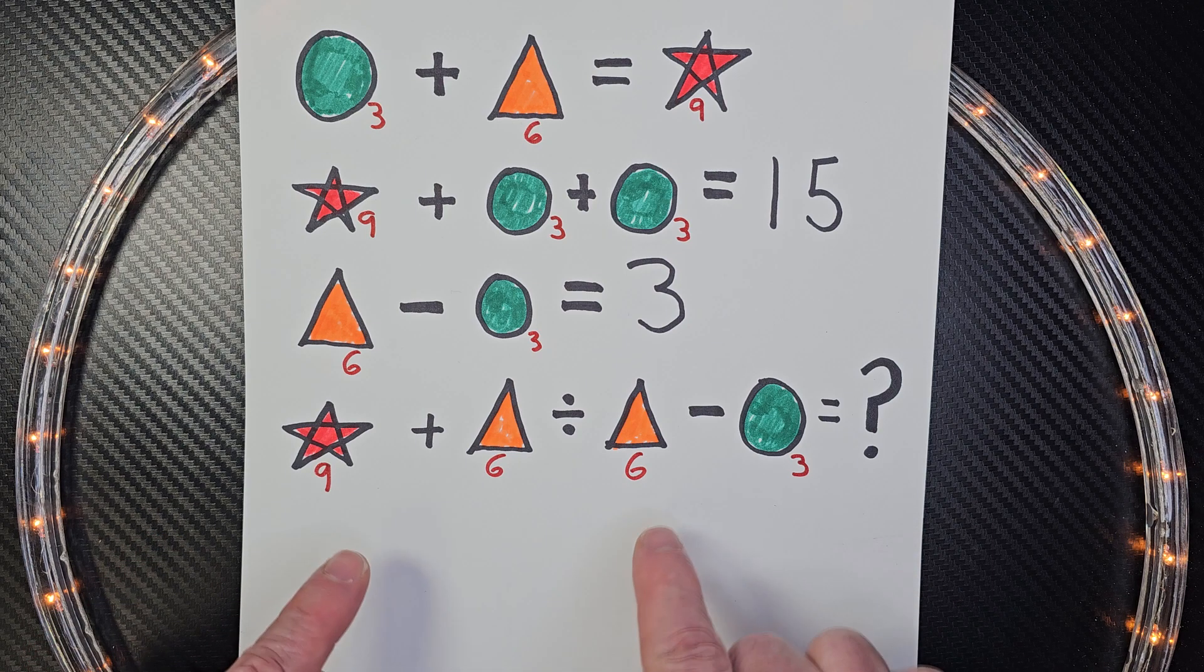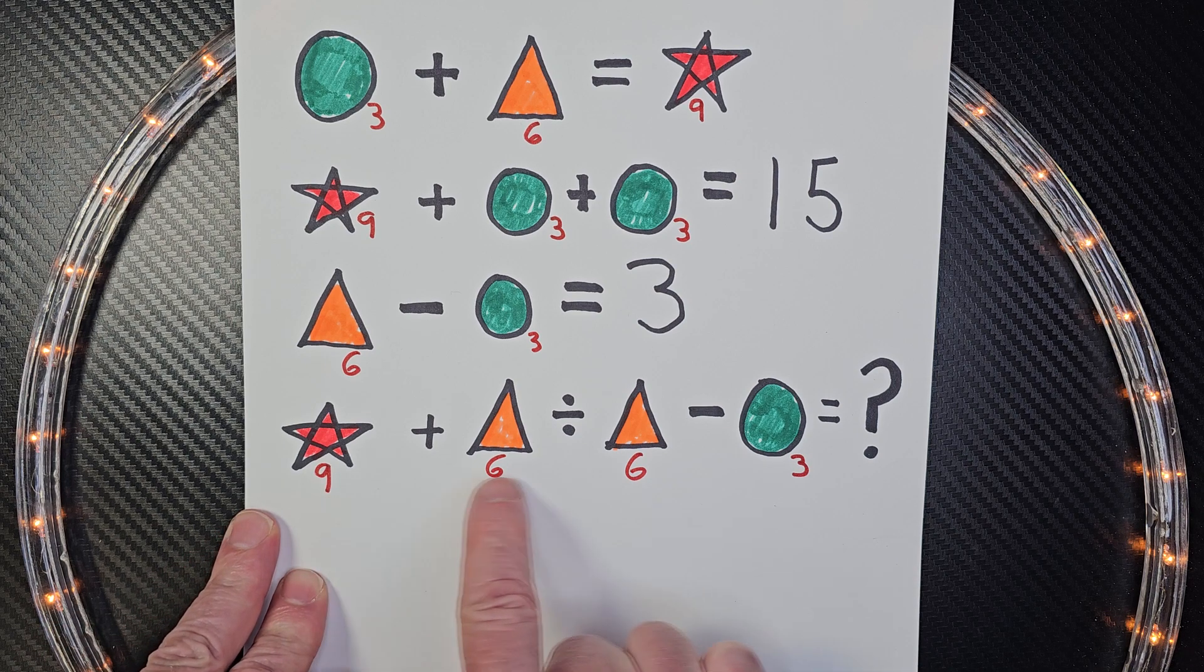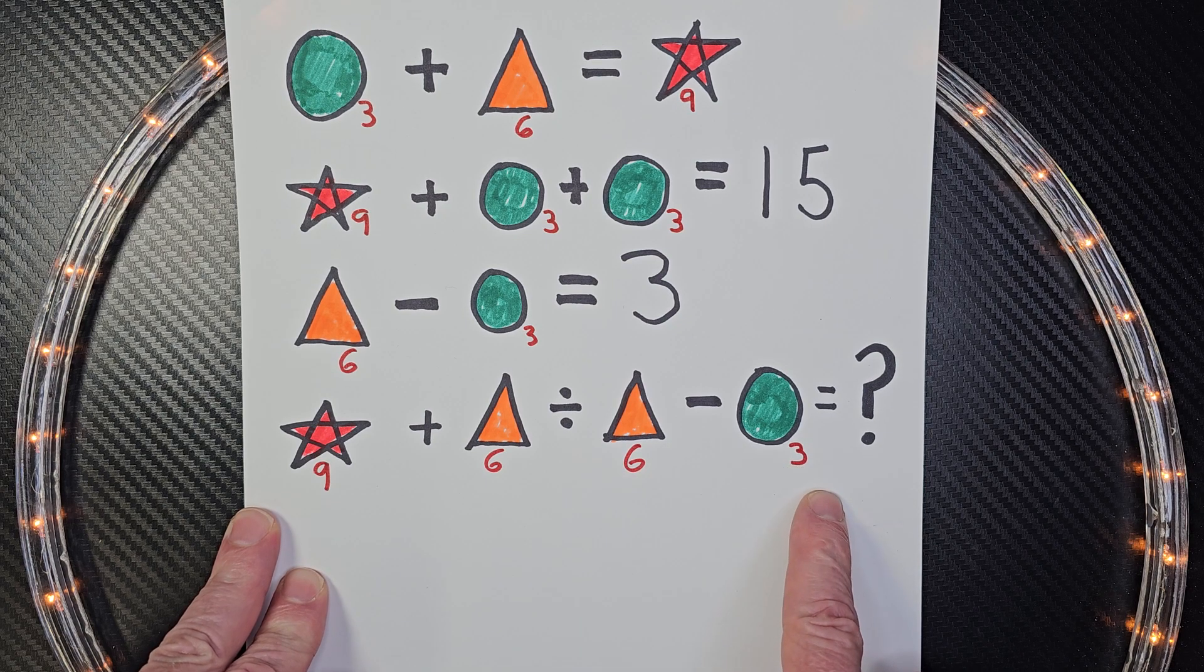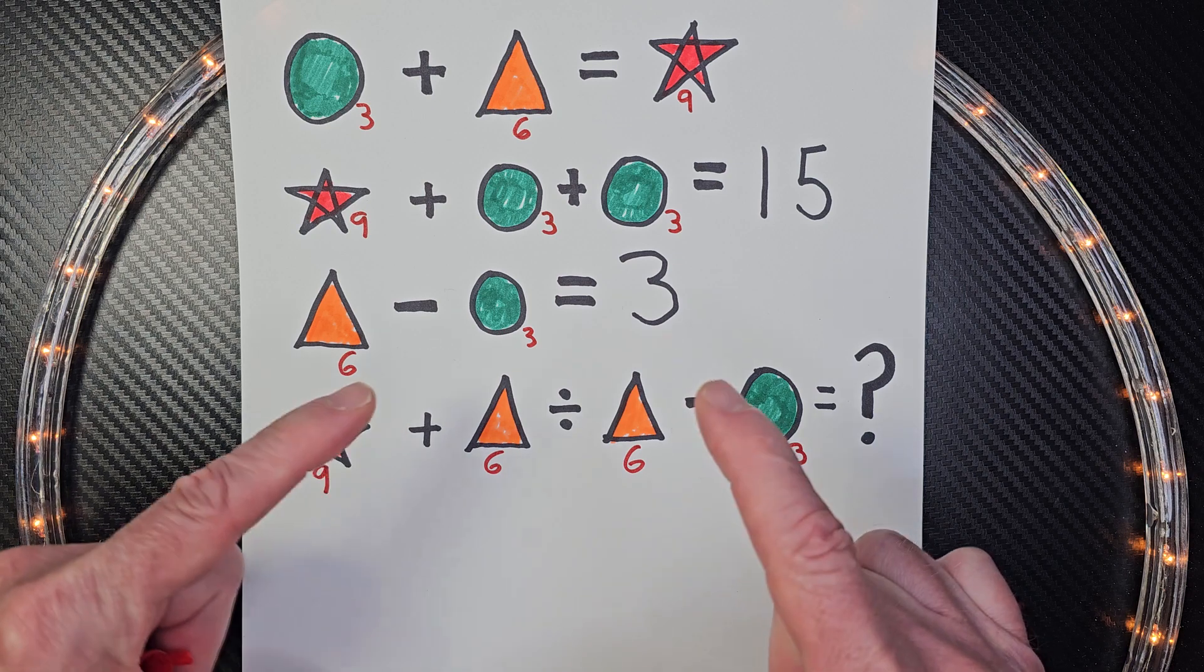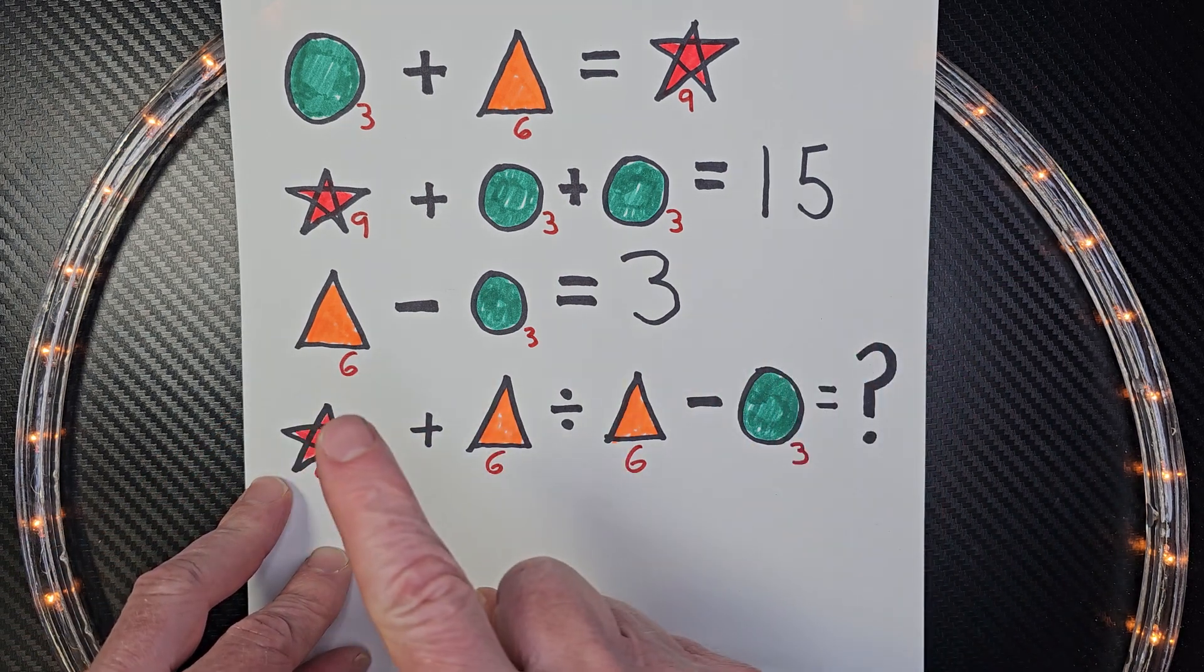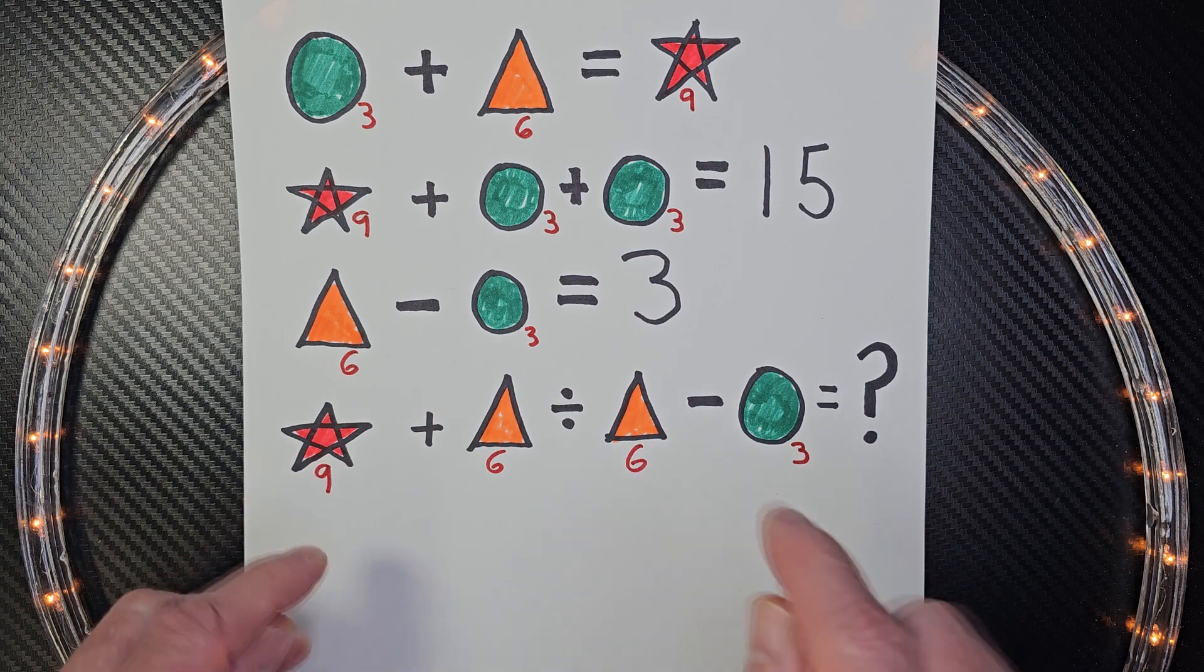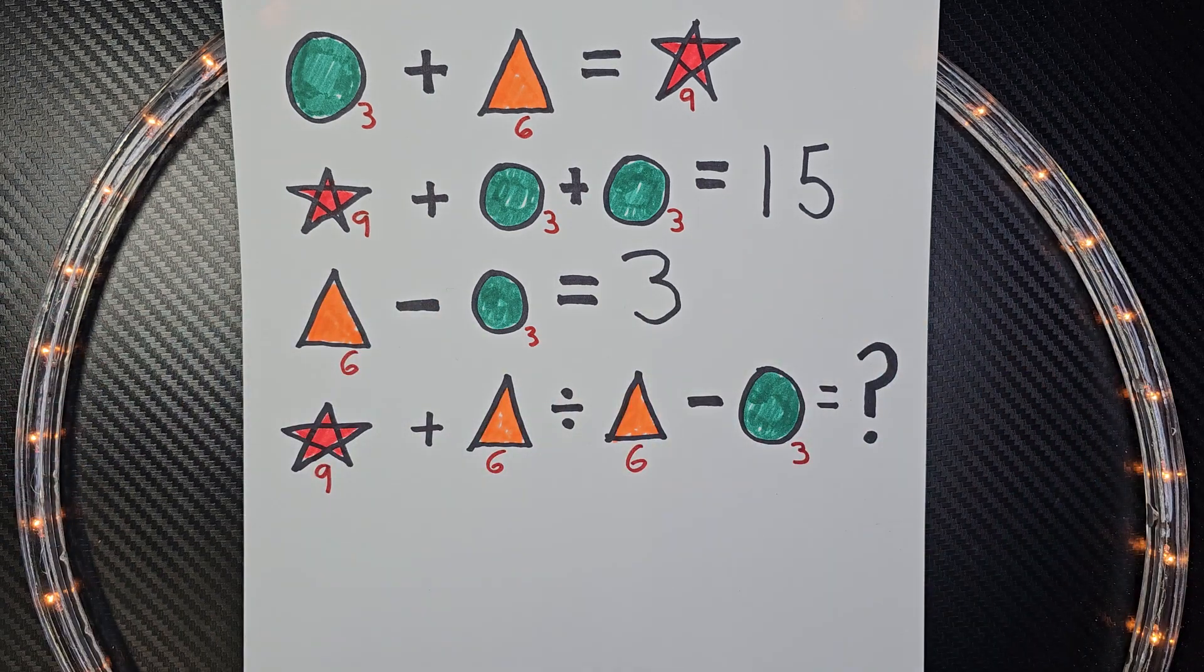We have to use order of operation with this. We just simply can't go nine plus six and then divide six and then minus three. We need to use order of operation. So order of operation is you do what's inside parentheses first, then exponents, then multiplication and division from left to right, and addition and subtraction from left to right. We use that to keep consistent with all of our problems.